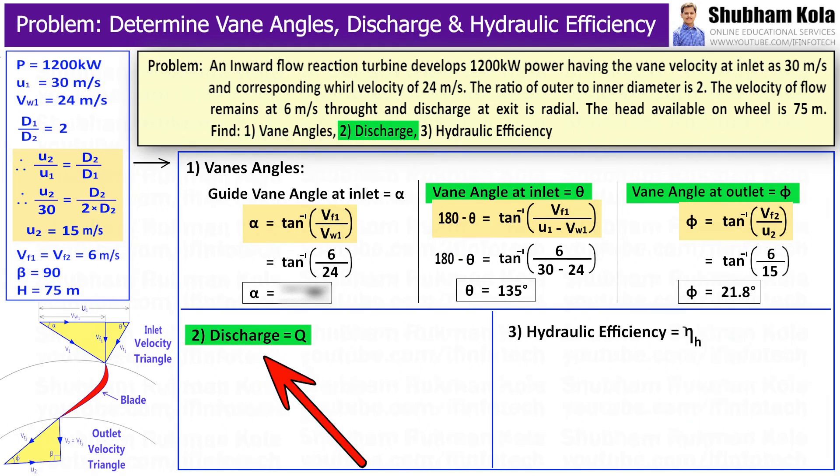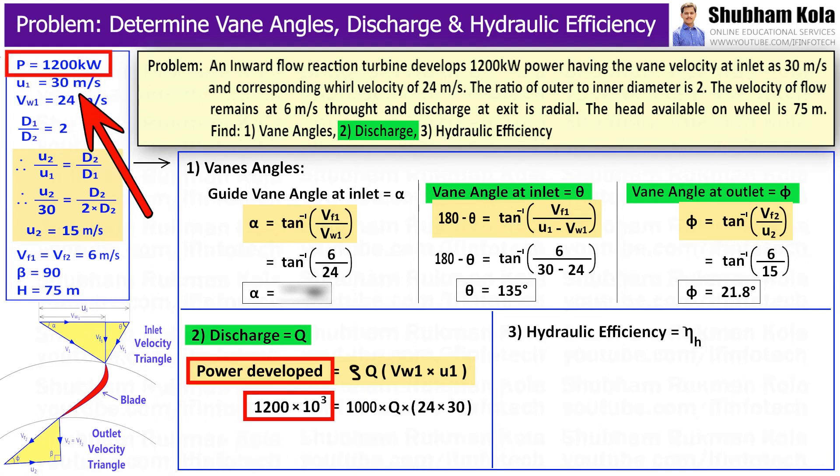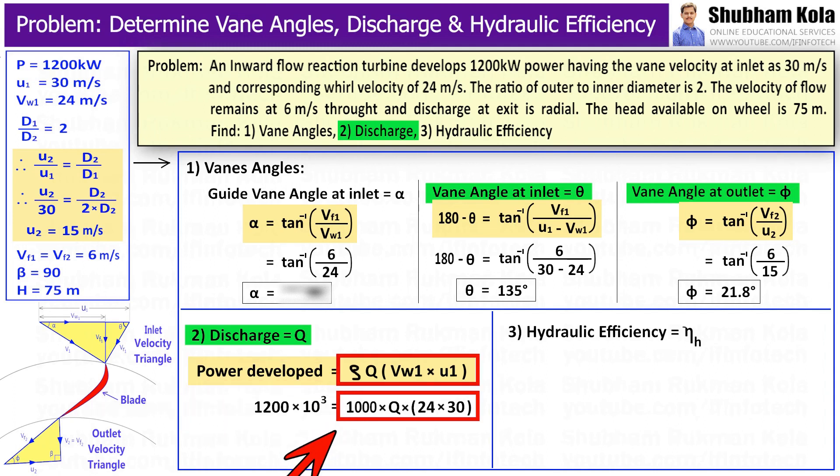Next we want to calculate discharge of turbine, that is capital Q. To calculate discharge, I will use the equation of power developed by runner which is given in question. Therefore, power developed by runner 1200 kW equal to ρQ(vw₁ × u₁).